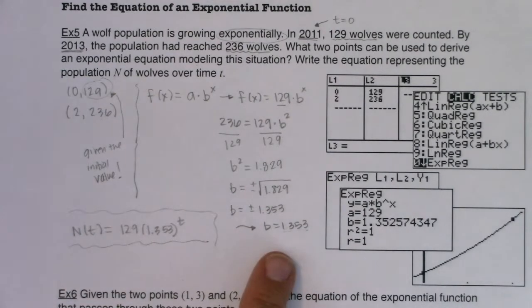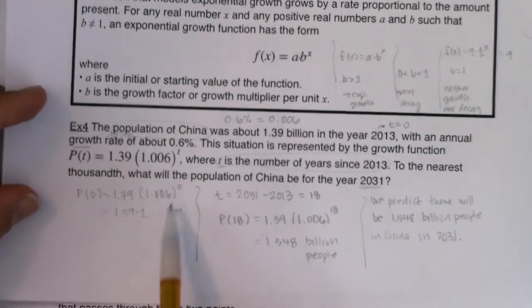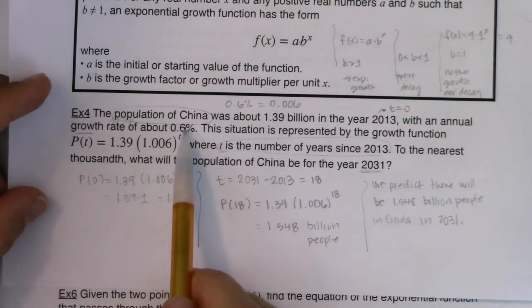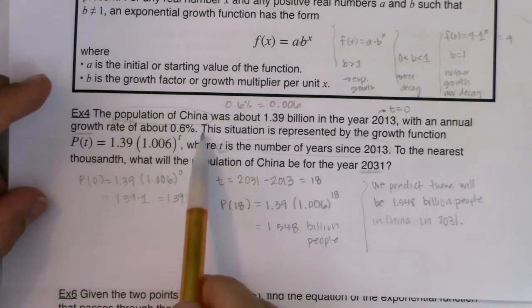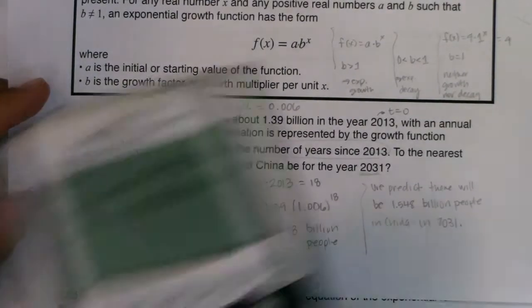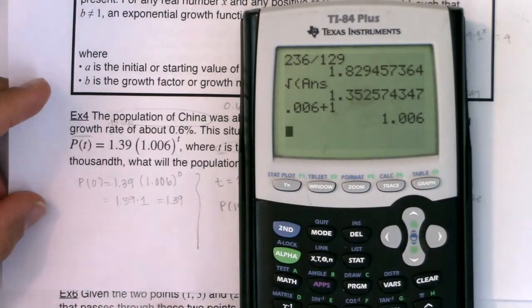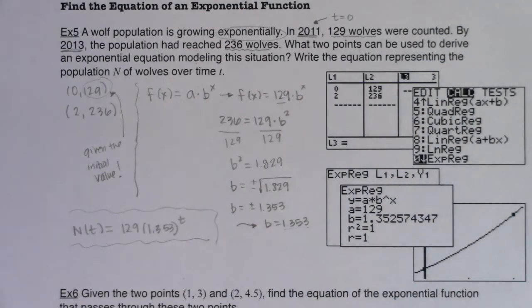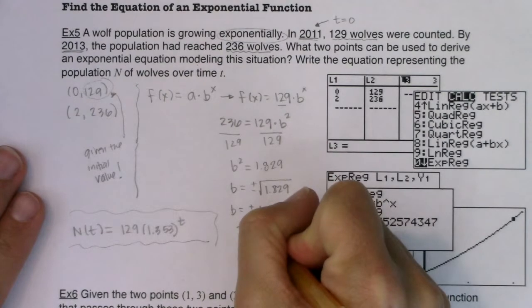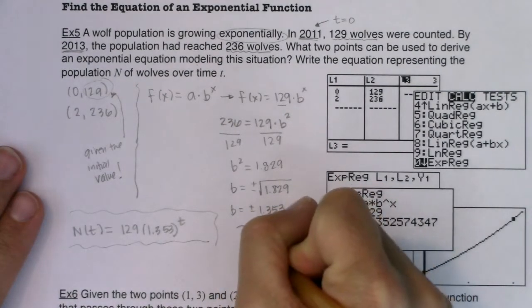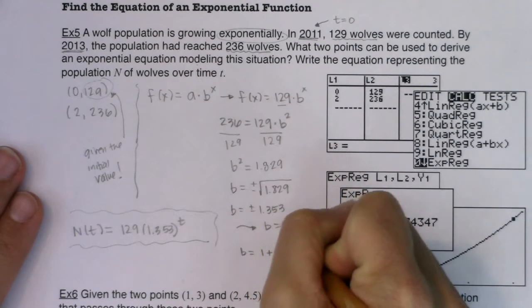And I just want to unpack this 1.353 for a moment. When we were doing example four, we talked about China's population growth. And remember that we had 1.006 here for the base, because China was growing. It had a growth rate of about 0.6%. And we could get that decimal, if we take 0.6% and write it as a decimal, that is 0.006. And we added that to our equilibrium base of one. And that's how we got this base of 1.006. So let's go back to the wolves and take a look at what's happening with the wolves and see if we can talk about that base in the same sense. If I took this base and I broke it down, this 1.353 could be equal to 1 plus 0.353.